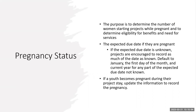Pregnancy status is collected throughout a client's time in your program. The purpose is really to determine the number of women who are starting the project while pregnant or who have become pregnant while in the project. If the expected due date is known, you will put the due date within HMIS as well. If unknown, record as much of the date as is known — default to January for the first of the month and the current year for anyone who doesn't know their due date. If a youth becomes pregnant during the project stay, please update the information and record the pregnancy data within an interim review.